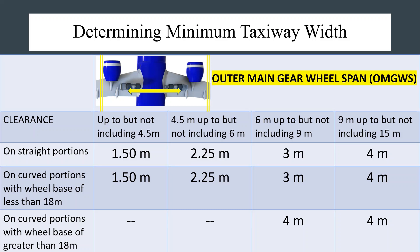The outer main gear wheel span is different for each category of aircraft. Therefore, if you have an aircraft with an outer main gear wheel span of less than 4.5 meters, you will have a clearance of 1.5 meters on straight portions of the taxiway. If it is 4.5 meters but less than 6 meters, the clearance distance will be 2.25 meters. It is 3 meters when the outer main gear wheel span is less than 9 meters, or 4 meters when the outer main gear wheel span is above 9 meters but less than 50 meters. These values all apply to straight portions.